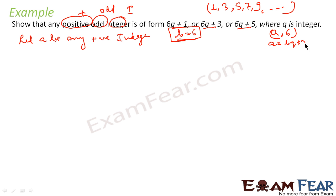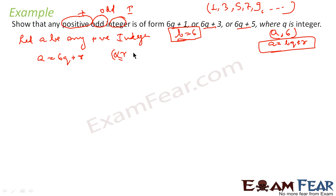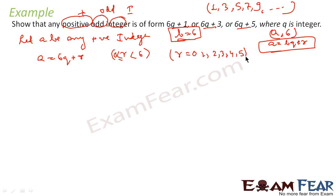For any number a and b where b = 6, I can write a = bq + r using Euclid's division algorithm. So I can write a = 6q + r. Also, by the formula, r is greater than or equal to 0 and less than 6. So the possible values of r are 0, 1, 2, 3, 4, and 5.